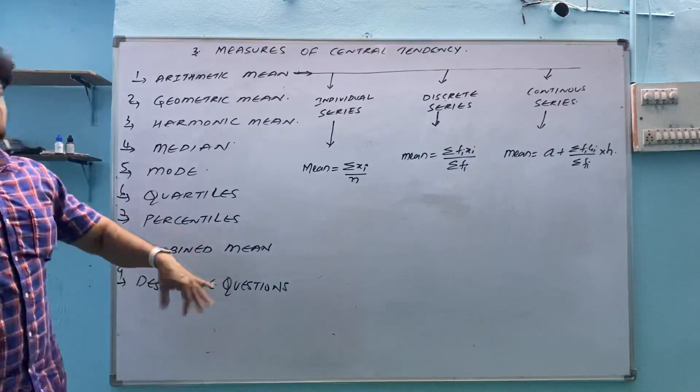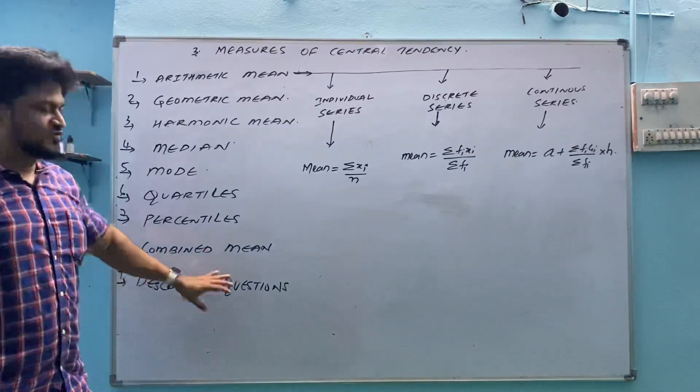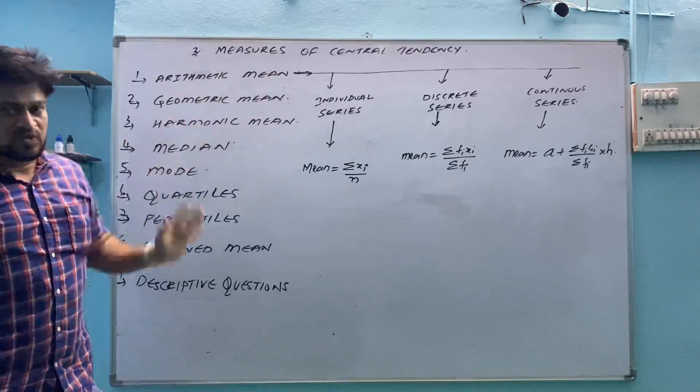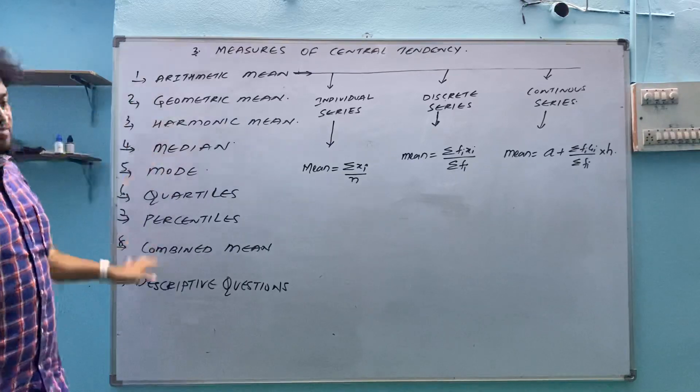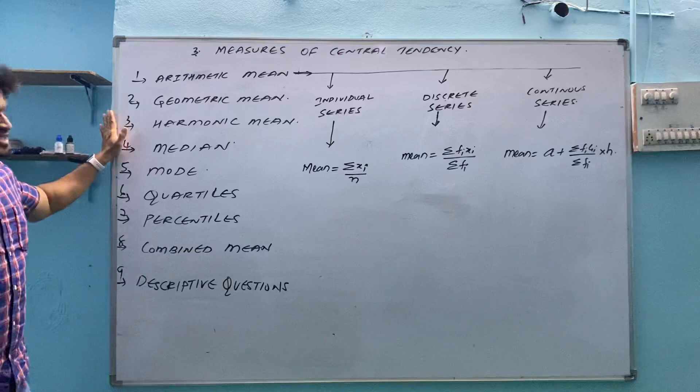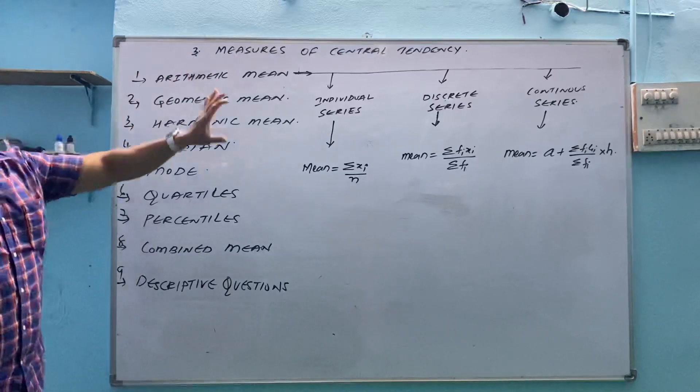Like how to find if one of the mean value is missing or one of the frequency is missing. Basically what we have is in measures of central tendency unit, number of types of problems we have took the 9 types in which we discuss one type daily.